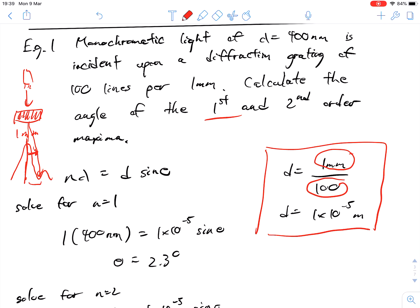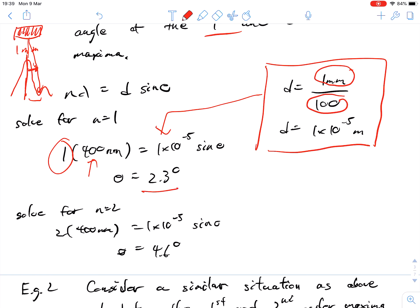First off, what we want to do is separately calculate D. The slit separation is within 1 millimeter of space, and there's 100 divisions within that. So 1 millimeter divided by 100 is going to give us 1 times 10 to the power of negative 5. We substitute that value of D in, that's the first order or N equals 1. So that's 2.3 degrees is what we get.